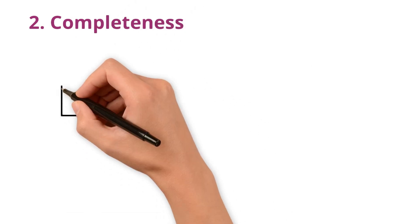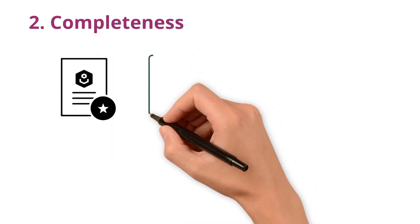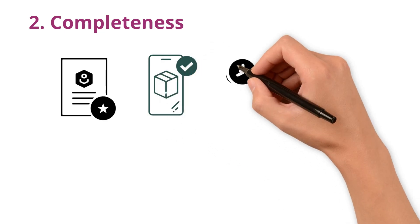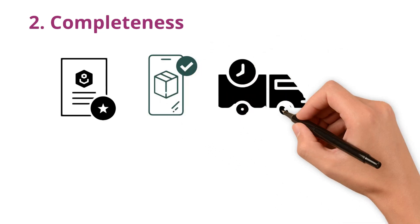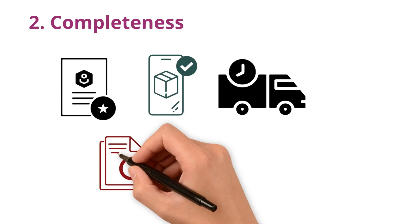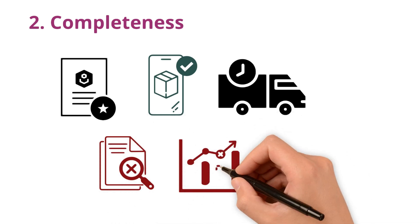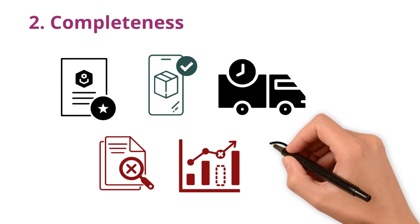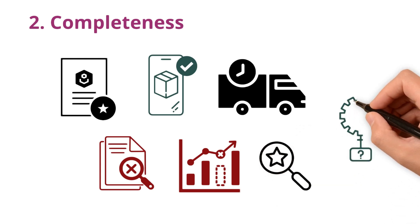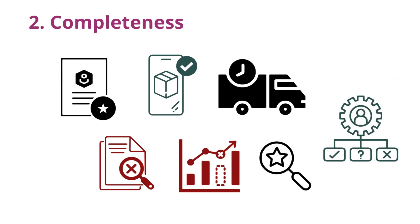Completeness means having all the important info you need. Like if you are ordering something online, you would want to know the delivery time, right? If that detail is missing, the data is not complete. Having complete data is important because it ensures that the information is sufficient to make informed decisions.